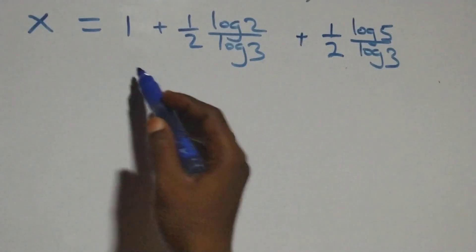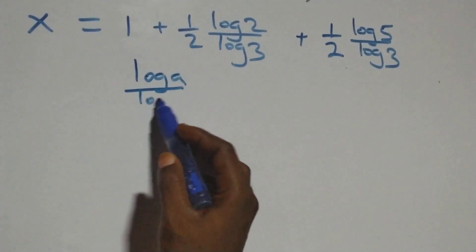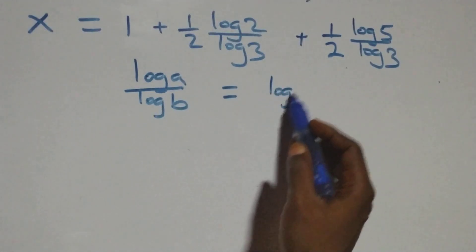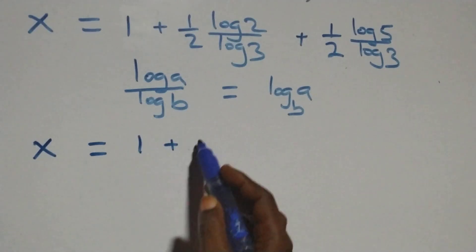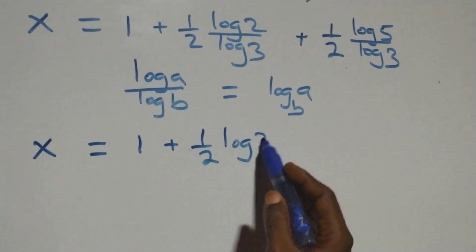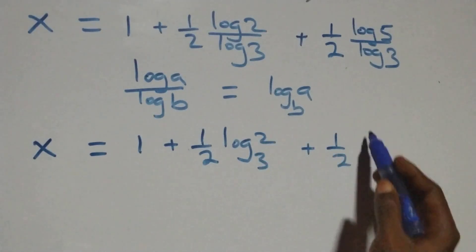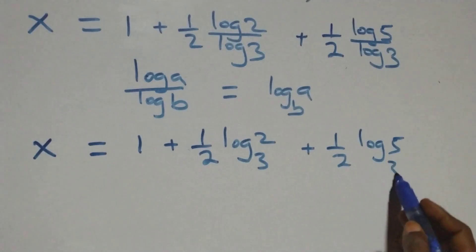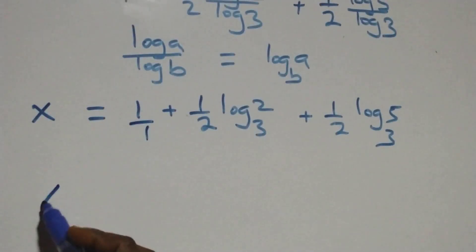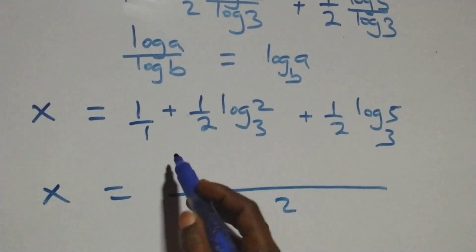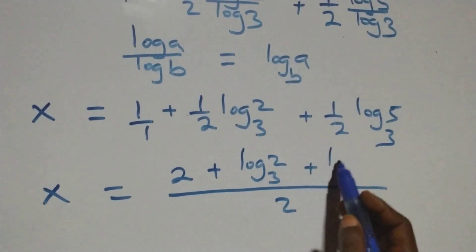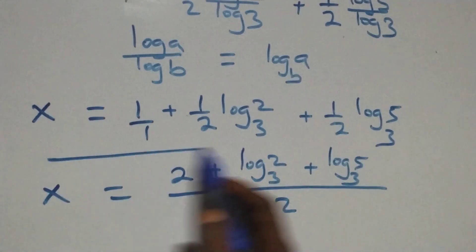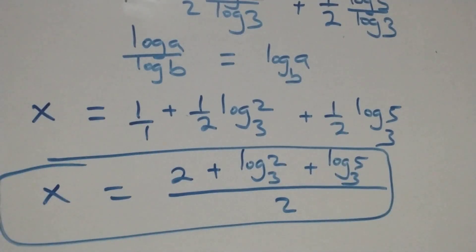Then here we apply the change of base. We bring this together as one fraction over a common denominator of 2, and we have x equals to (2 plus log 2 base 3 plus log 5 base 3) all over 2.